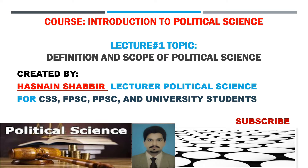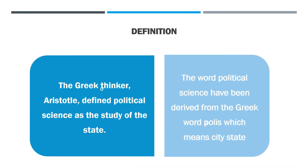In other words, this course is about me, you and all of us. So very first we have definition and scope of political science. A great thinker Aristotle defined political science as the study of the state. Keep in mind, the word political science has been derived from the Greek word polis, which means city-state.